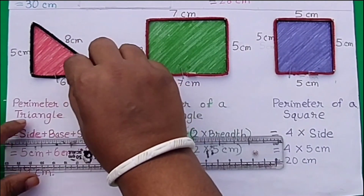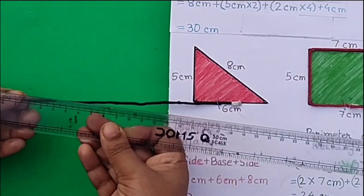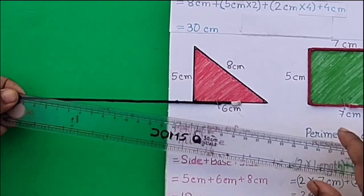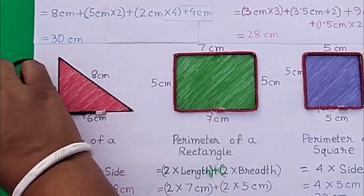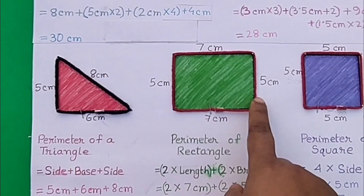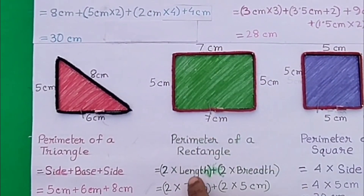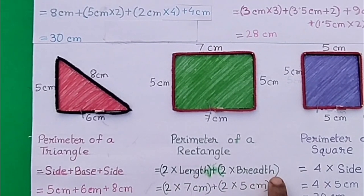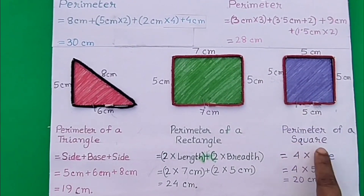Now we will measure it with the help of this scale. As you can see, it is 19 cm. In a rectangle, two opposite sides are equal. The longer sides are called length and the shorter sides are called breadth. The perimeter of a rectangle is 2 times length plus 2 times breadth. A square has 4 equal sides, so the perimeter of a square is 4 times the side.